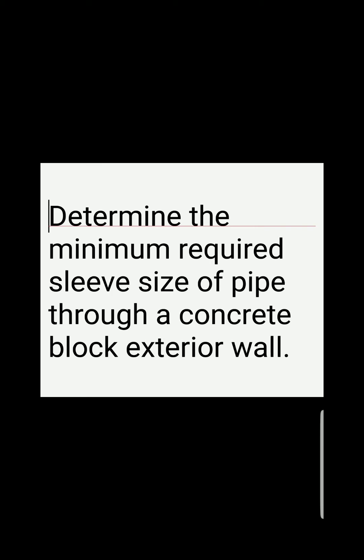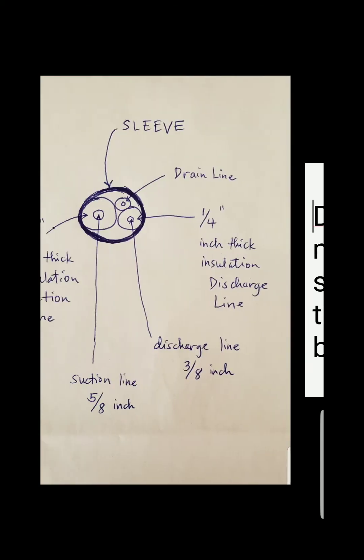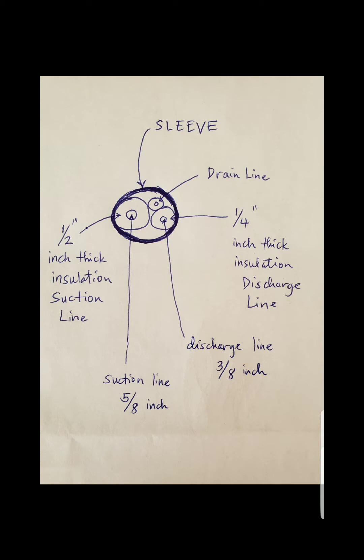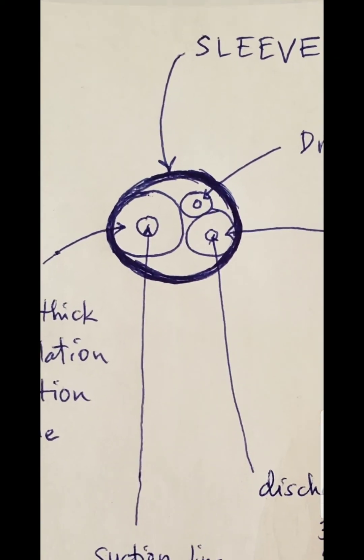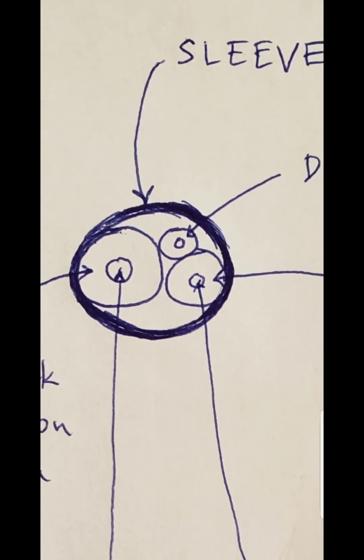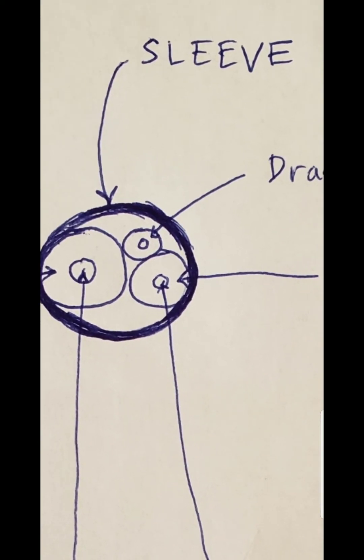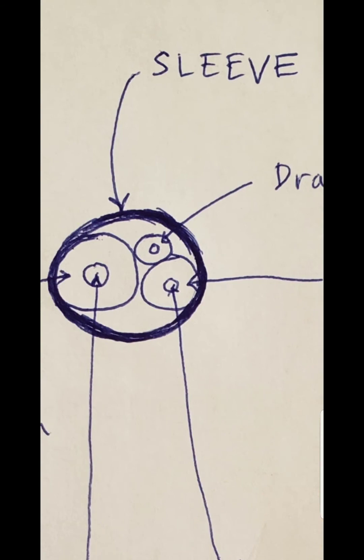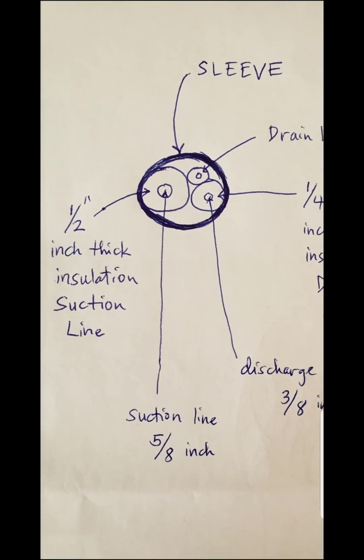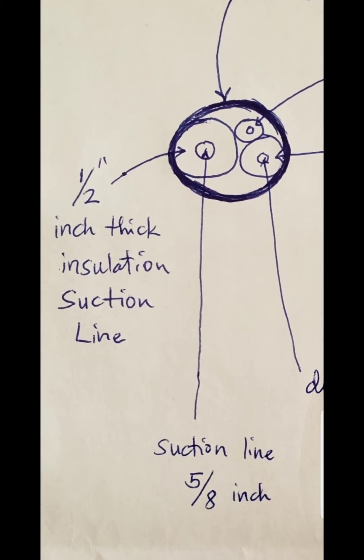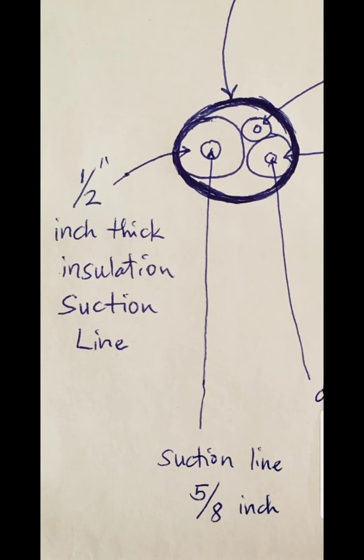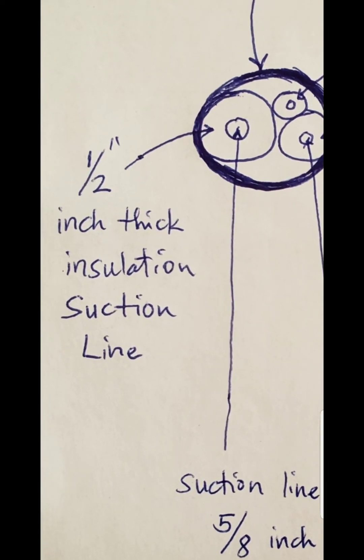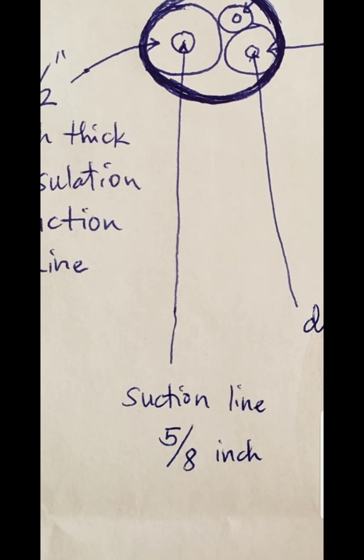To visualize the problem, I made a sketch here, a drawing. I'm going to enlarge it. The thick line there is the sleeve. The size of this sleeve, the diameter, they're asking for the diameter. The thicker line is the suction line. The suction line itself is 5/8 inch.